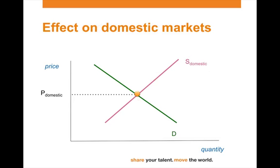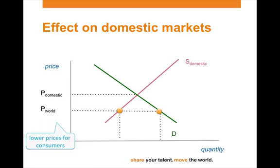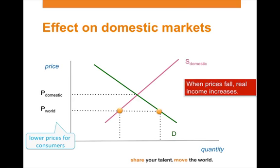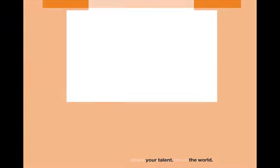Another aspect mentioned by Christine Lagarde is lowering prices for consumers. Remember, if the world price is below the domestic price, consumers will opt to buy their products on the world market. Eventually this leads to lower prices for consumers, and lower prices mean that real income increases. Real income is the purchasing power of income — consumers can purchase more goods and services with that income. We'll explore trade in practice in the next video.